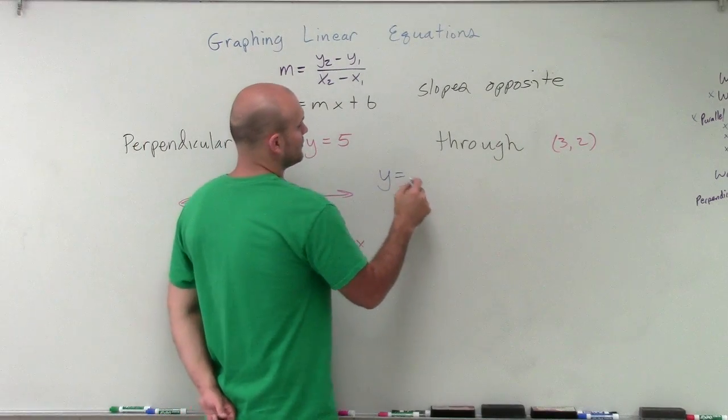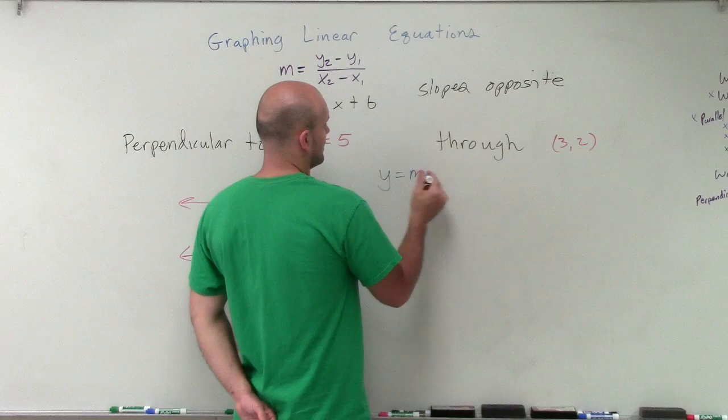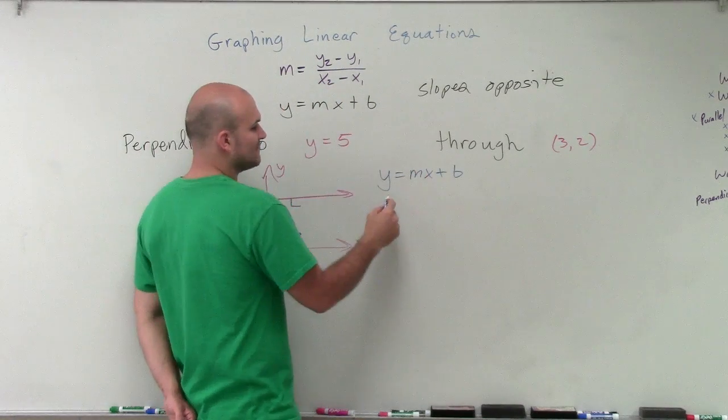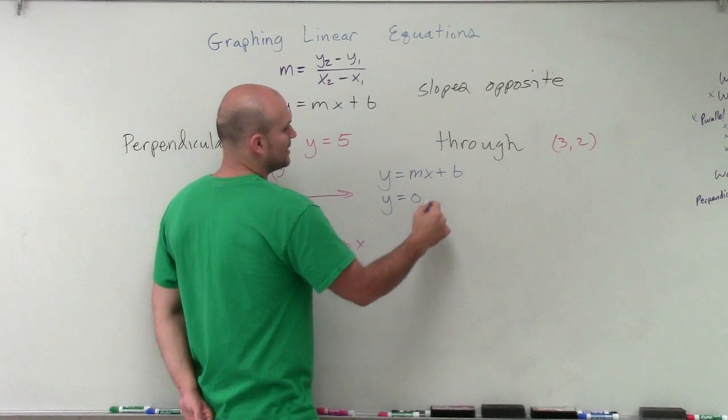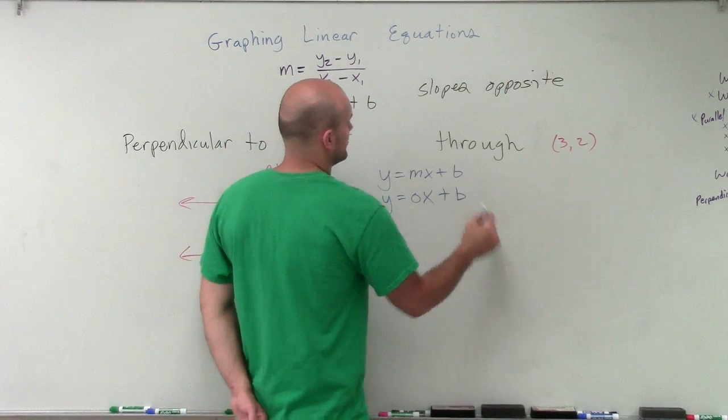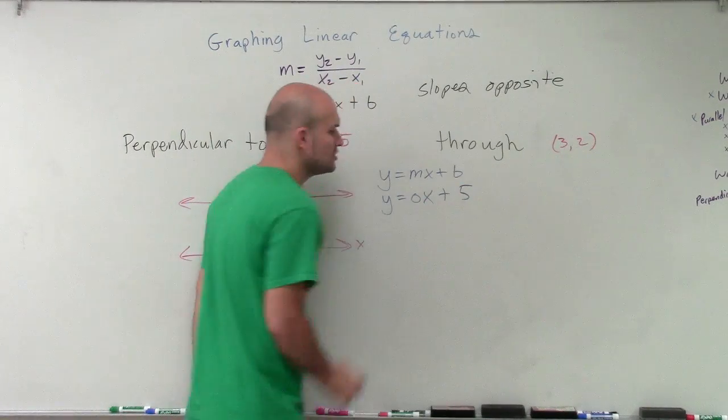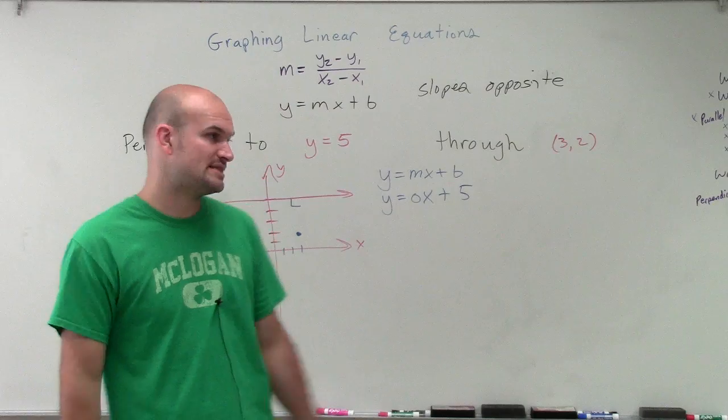So I can write y equals mx plus b. Well, all I have is a positive 5. So what I can determine is that my slope is equal to mx plus 5. I can determine that my slope is going to be equal to 0.